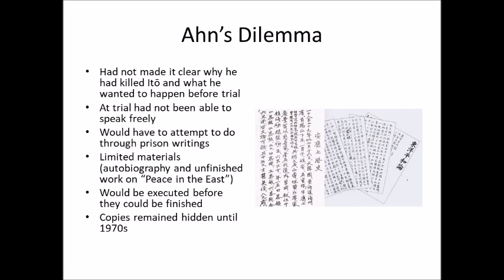The difficult situation Ahn faced was that he had not made it clear — before the trial — why he had killed Ito and what he wanted to happen. He seems to have thought people would automatically understand it. At trial he tried to explain himself but hadn't been able to speak freely — he was very limited in what he could say and was told to rush himself. He did get his basic ideas out about why he killed Ito, but he wasn't really ever able to articulate what he wanted to build or how he wanted to transform Asia.